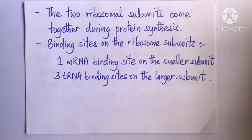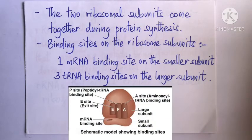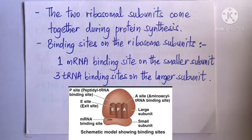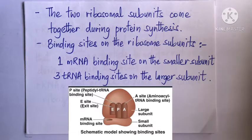The two ribosomal subunits combine together to form a whole ribosome during protein synthesis. The smaller ribosomal subunit has one mRNA binding site, while the larger subunit has three tRNA binding sites called the A site, P site, and E site. This is how the ribosome interacts with mRNA and tRNA to synthesize proteins.